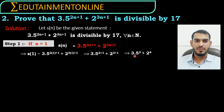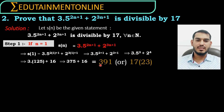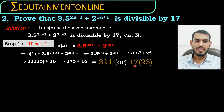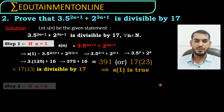5 power 3 means 125, and 2 power 4 is 2 times 2 times 2 times 2, which is 16. So 3 into 125 plus 16 is 375 plus 16, which equals 391. This 391 can be written as 17 into 23, so 391 is divisible by 17. Therefore s of 1 is true.